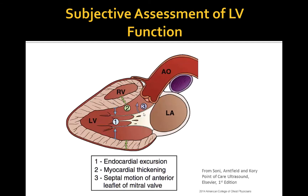The examination of LV focuses on evaluating motion of the left ventricular walls by a visual estimation of the volume change from diastole to systole. Three main components of LV function assessment include the following. First, estimating the endocardial excursion — in other words, movement of each portion of the endocardium towards the center of the heart.